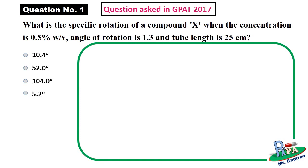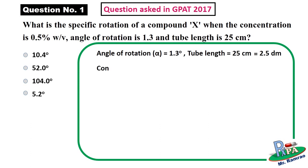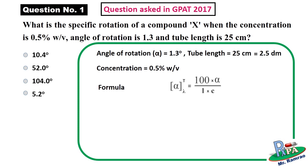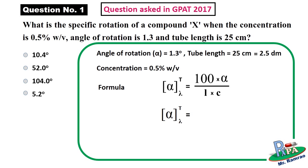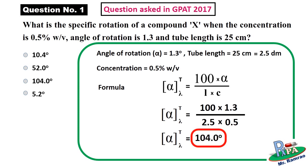First write down what is given: angle of rotation = 1.3 degrees; tube length = 25 centimeters. As discussed earlier, length must be in decimeters, so divide 25 cm by 10, which equals 2.5 decimeters. Concentration = 0.5 percent weight by volume. Since concentration is given in percent weight by volume, use the formula containing the factor 100. Putting in the values: specific rotation = (100 × 1.3) / (2.5 × 0.5) = 104 degrees. The correct answer is the third option, 104 degrees.